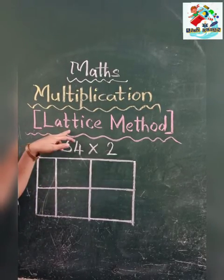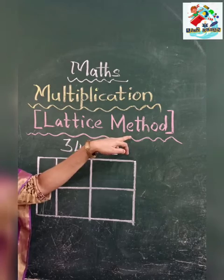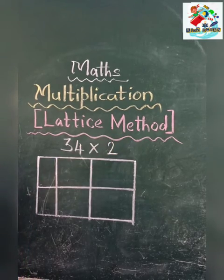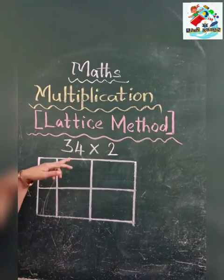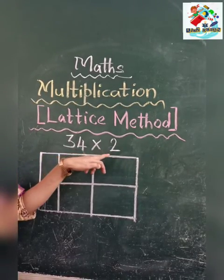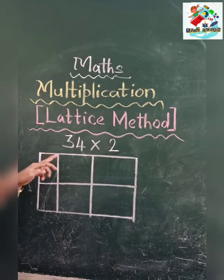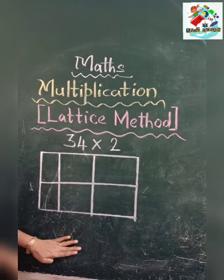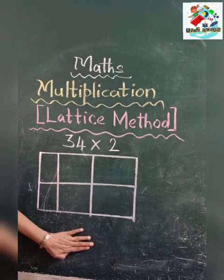That is called lattice method. This is one of the methods of solving multiplication sums. Now see children, here is our sum: 34 multiplied by 2. So in lattice method we have to first draw the columns like this.